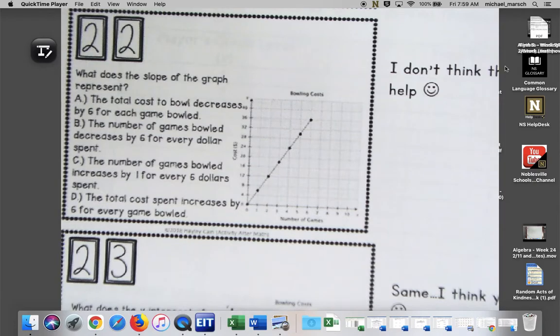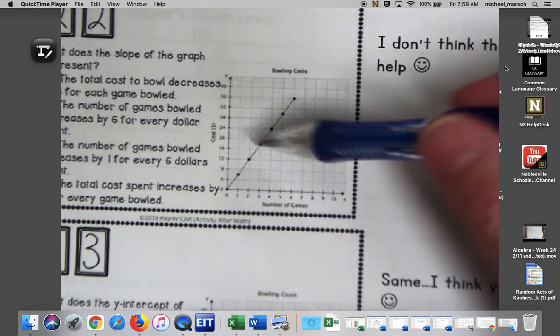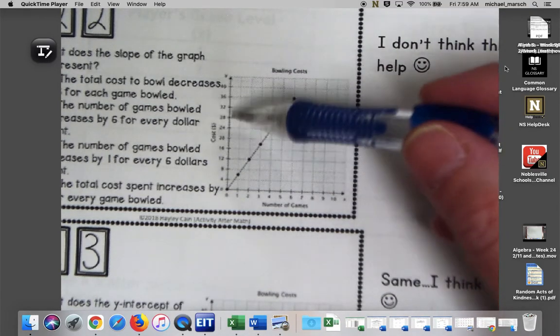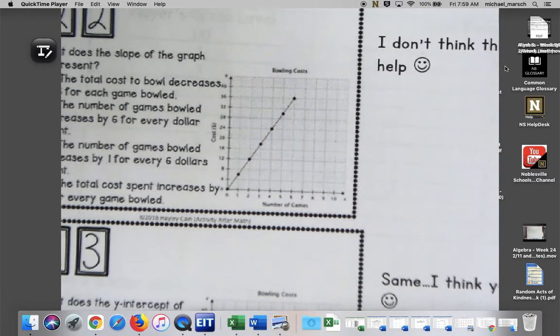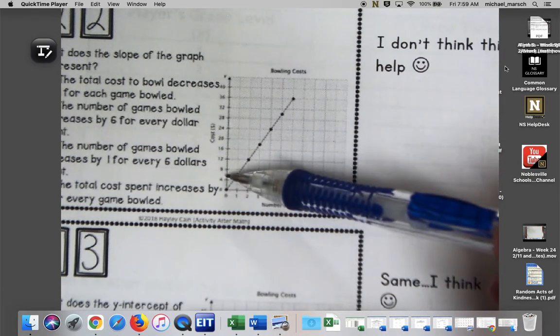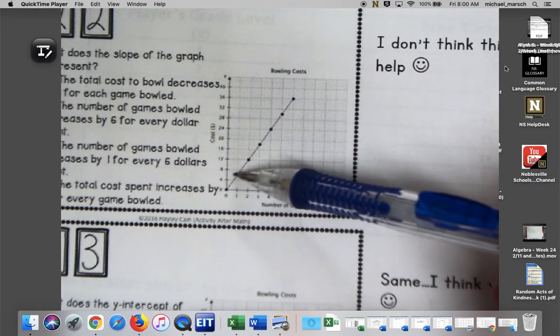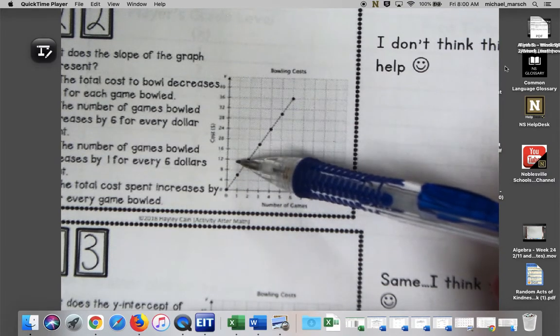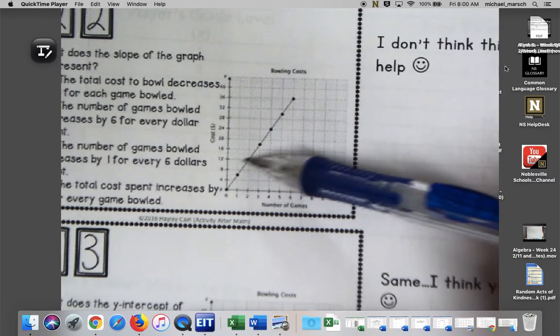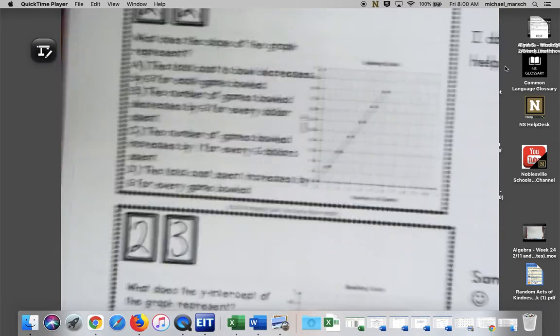22, what does the slope of the graph represent? We've got number of games and the cost because we're bowling. Our slope is going to represent the cost per game that you play. We can look here and we can say, well, it's probably six dollars per game because it goes up six over one, up six over one, up six over one.